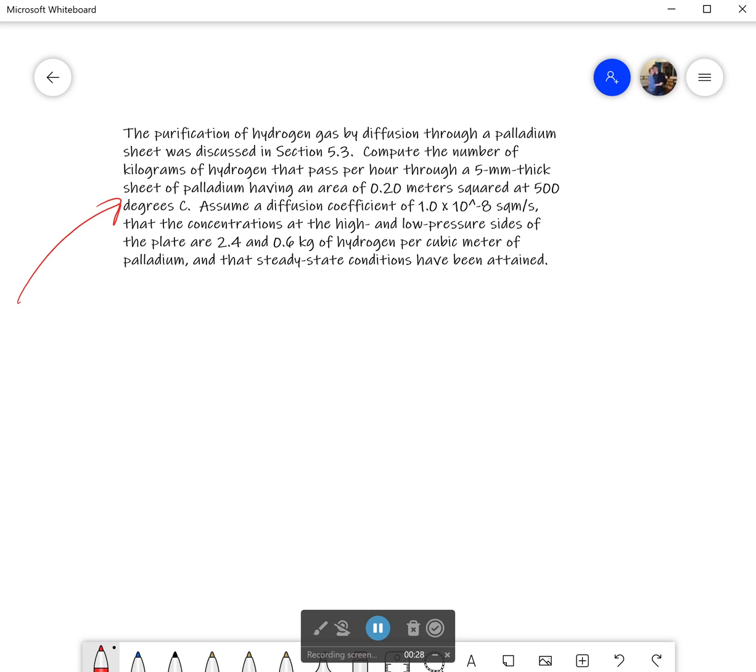So, what it says is the purification of hydrogen gas by diffusion through a palladium sheet was discussed in section 5.3 in the textbook. And it's saying compute the number of kilograms of hydrogen that pass per hour through a 5 millimeter thick sheet of palladium having an area of 0.2 meters squared.